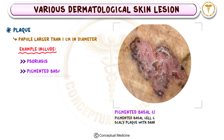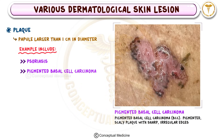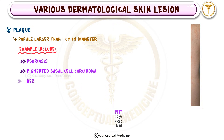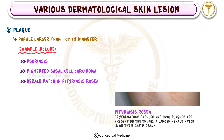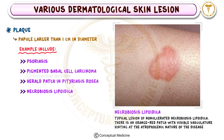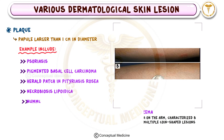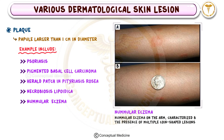Other examples include pigmented basal cell carcinoma, the herald patch seen in pityriasis rosea, necrobiosis lipoidica, and nummular eczema, which presents as coin-shaped plaques.